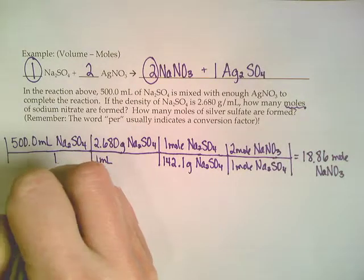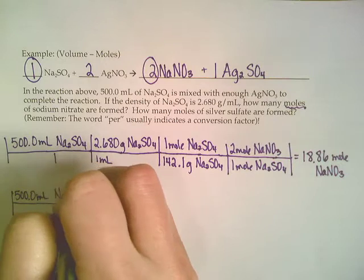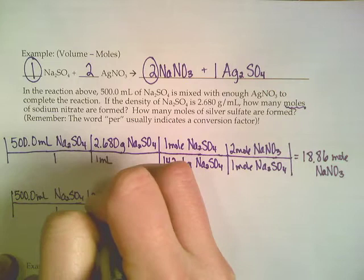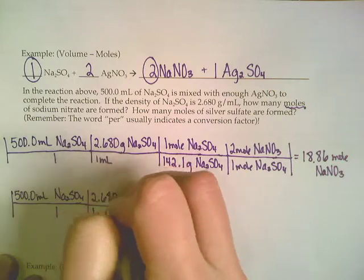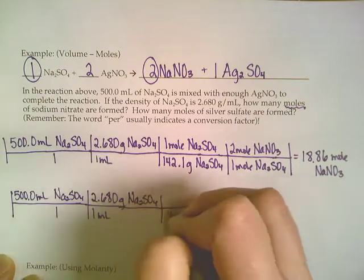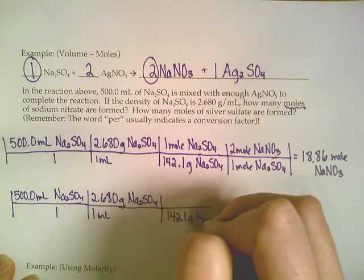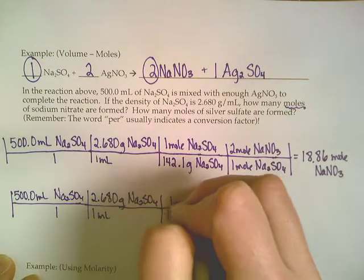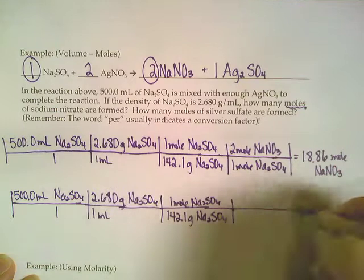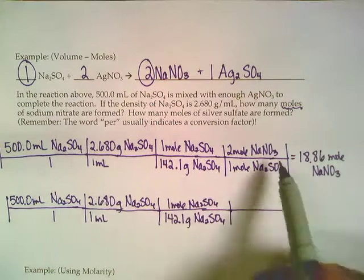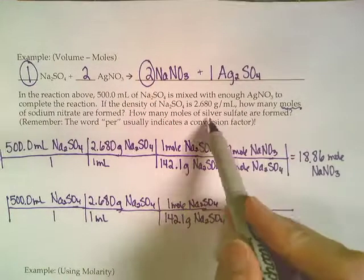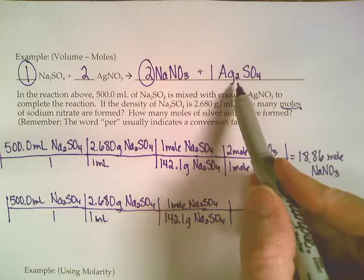We'd still have that 500 milliliters. And we're still going to use the density to get our milliliters into grams. Then we'd still use that molar mass to get our grams into moles. The only thing that's changing is what we're comparing it to at the end. So instead of comparing sodium sulfate to sodium nitrate, part two wanted how many moles of silver sulfate are formed.